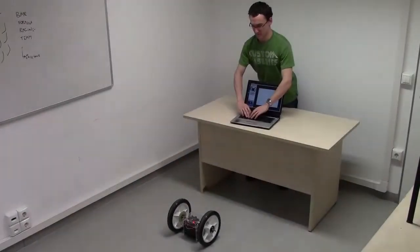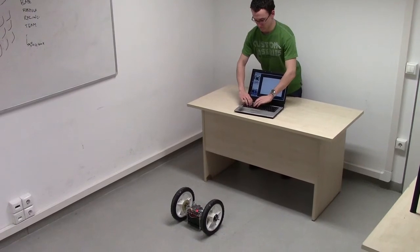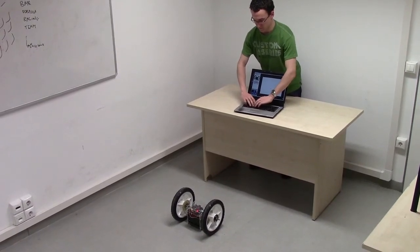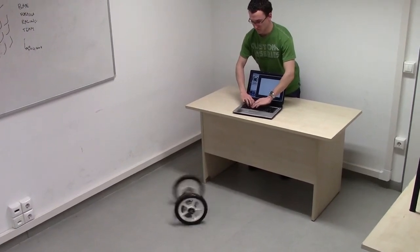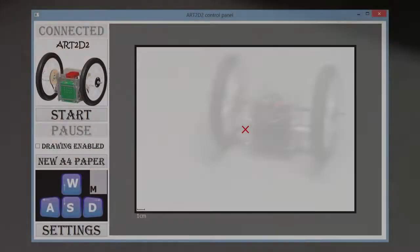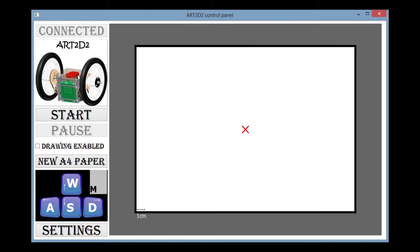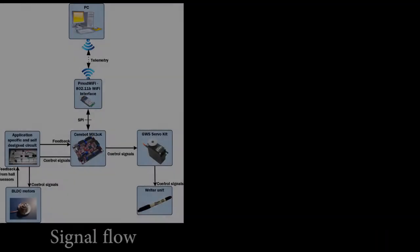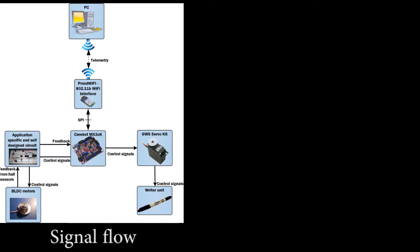The remote control of ART2D2 is implemented via Wi-Fi connection between a laptop and the device. The user can command it by a Java user interface to go forward or backwards, to turn left and right, and to move its marker. Furthermore, using telemetry, the device sends back its coordinates to the laptop.